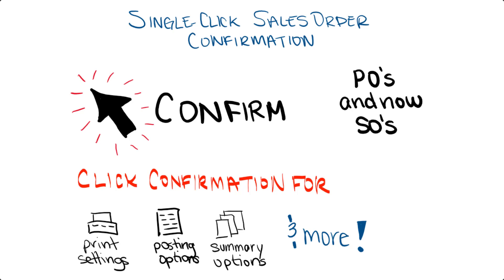The idea is that it makes it faster and easier for users to confirm sales orders. It's important to note that the user will need to go into that confirmation screen the first time to select their different options — this includes things like the print settings, the posting settings, and if you're using summary invoicing. You select all of those options and the system will remember those settings for next time. Let's take a look at how to enable this feature using feature management.